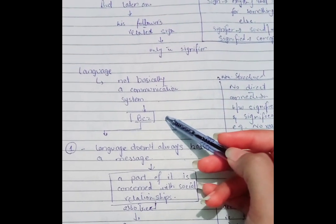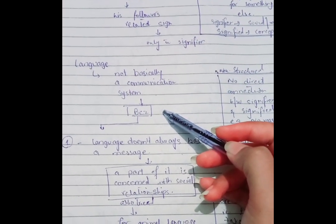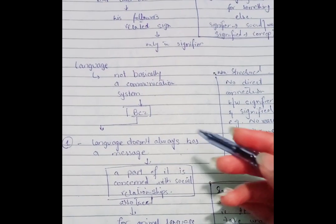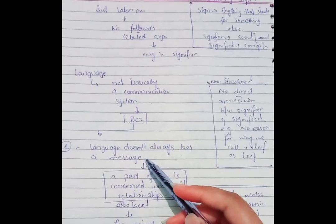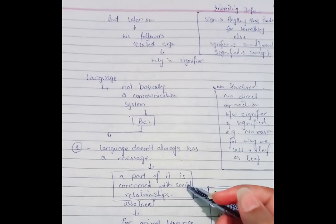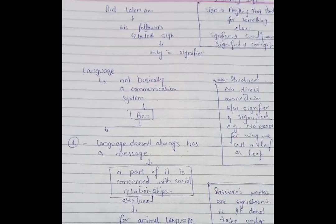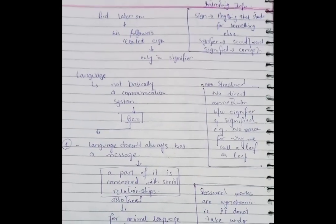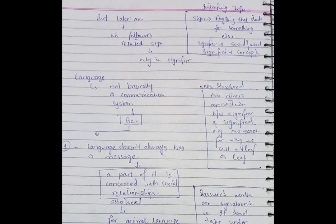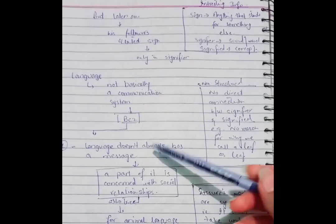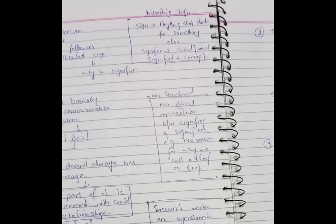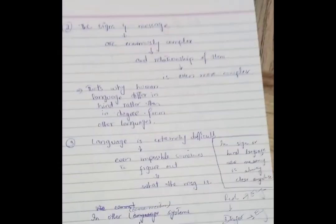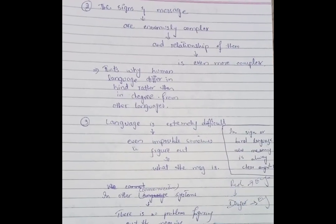Language is not basically a communication system, for three reasons. First, language doesn't always have a message — sometimes our conversation and the words we use depend upon our social relationships. Second, the signs and meanings are enormously complex, and the relationship between them is even more complex.